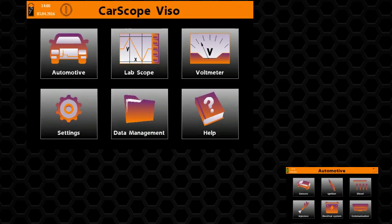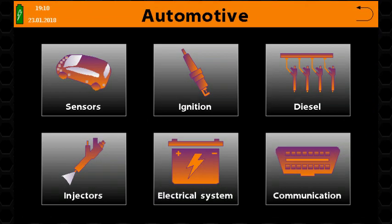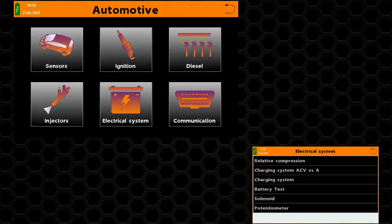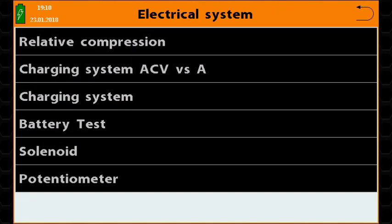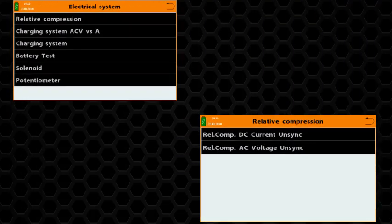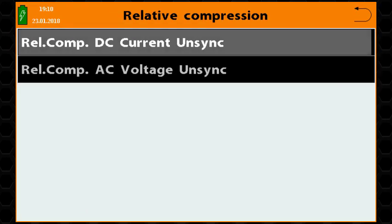Relative compression functions are part of the electrical systems test operation group. CarScope Viso provides two relative compression test methods: DC current and AC voltage.